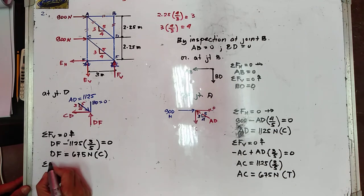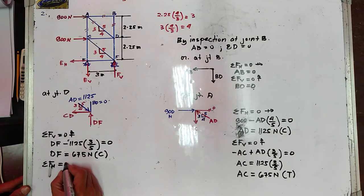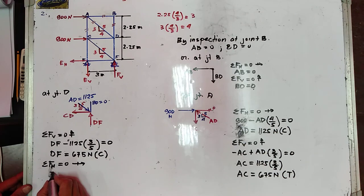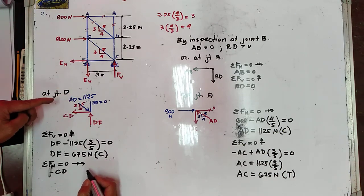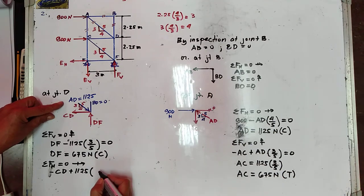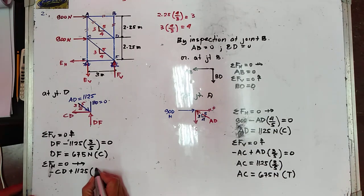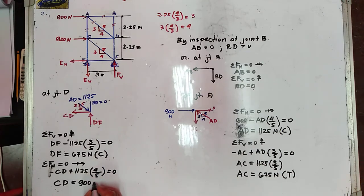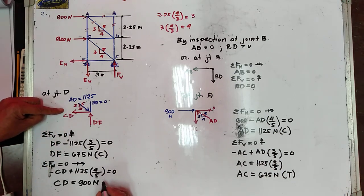Summation of forces horizontal equal to zero, to the right positive: −CD + 1125 × (4/5) = 0. Therefore CD = 900 N. We get a positive value, so the assumed direction is correct and CD is in tension.